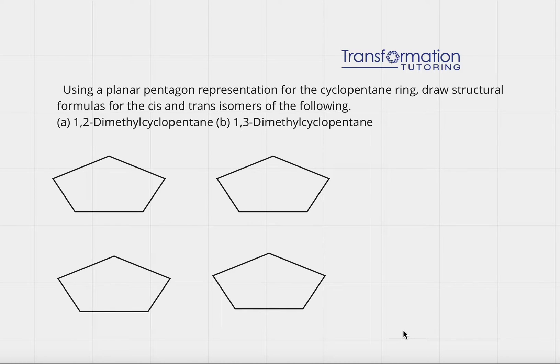Using a planar pentagon representation for the cyclopentane ring, draw structural formulas for the cis and trans isomers of the following. First we have to figure out what cis and trans is. Cis is when we have two substituents on the same side. For cis we will have same side and for trans we will have substituents on opposite side.